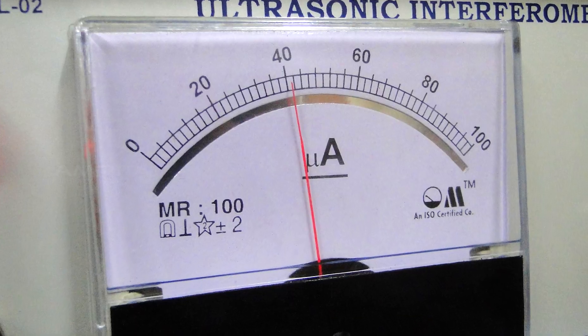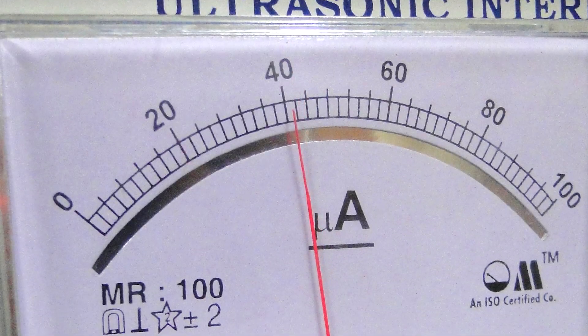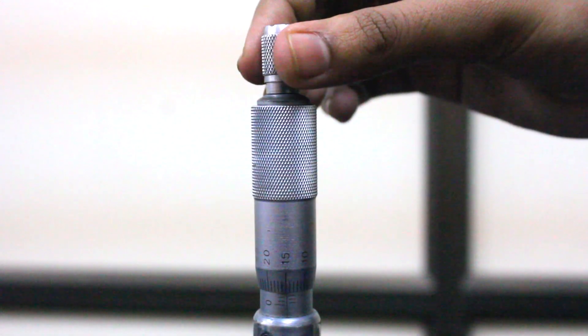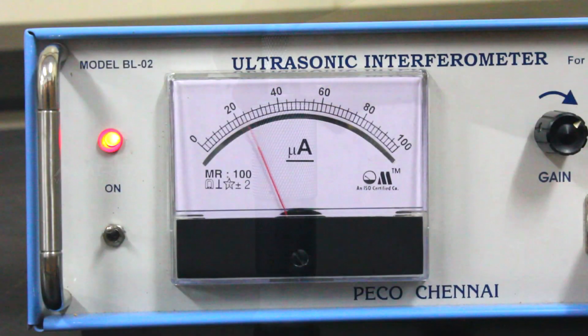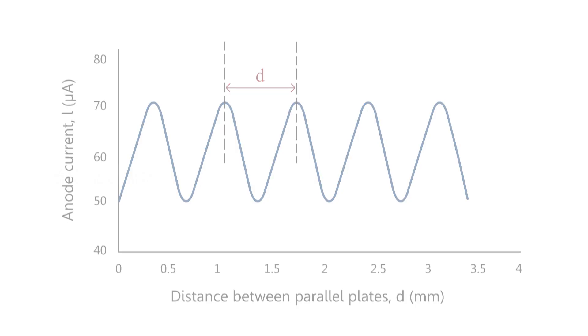Again move the micrometer. Then at a particular distance the anode current becomes minimum. Note down the anode reading and micrometer. Repeat the procedure till we get at least 10 maxima and minima. Now draw a graph between the micrometer distance and anode current. We will obtain a sine wave. The difference between the points of successive maxima will be d is equal to lambda by 2.